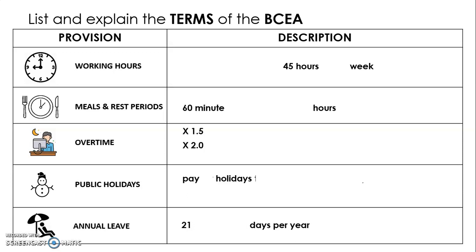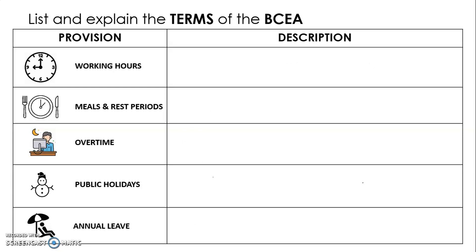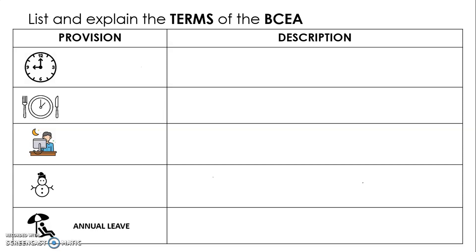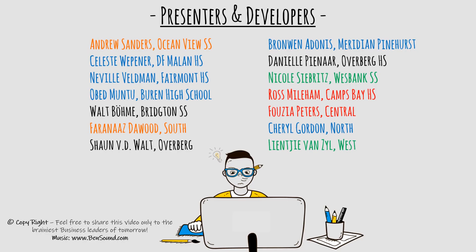Next, we take away our keywords, and we are left only with our provisions and images: working hours, meals and rest periods, overtime, public holidays, and annual leave. Next, we remove the provisions. Now learners, you are only left with your images, and hopefully you can remember the provisions and the descriptions provided in this video. Please remember that the second part of this video will follow — we will see you later.